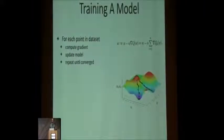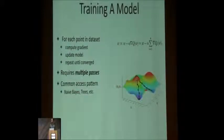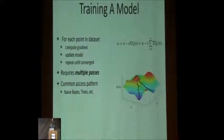You compute the gradient and you repeat. You do this over and over again until a certain number of iterations or until you've converged. This requires a lot of passes over the data. And even if you're not doing gradient descent, even if you're training a tree or a naive Bayes classifier or whatever else, this is a pretty common access pattern. You look over your data, you update your model, and you iterate back and forth.